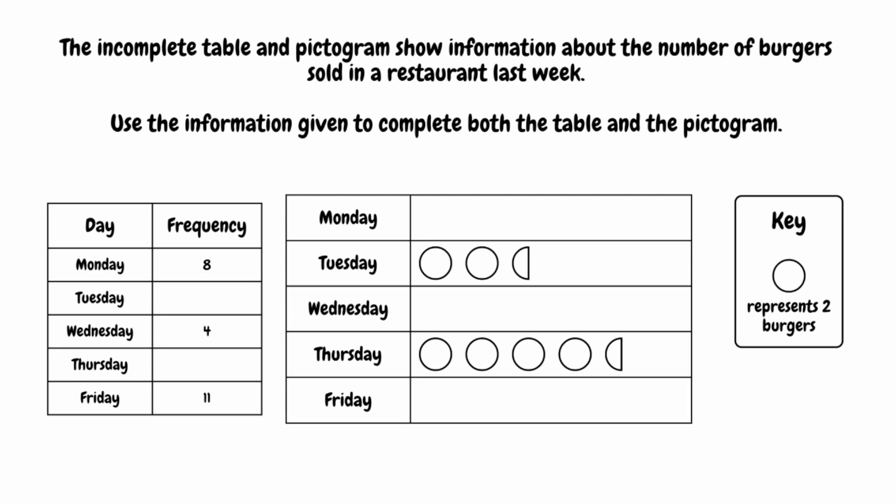We want to find the frequency of how many burgers were sold on Tuesday and Thursday. We can do that because we can see for Tuesday and Thursday, our pictogram is actually complete. We can see on Tuesday we have two and a half circles. Now we use the key — a full circle represents two burgers, so two full circles represent two burgers each, and the semicircle represents one burger. If we do two plus two plus one, that gives us five. So five burgers were sold on Tuesday.